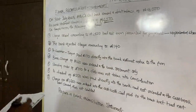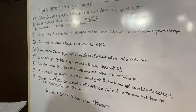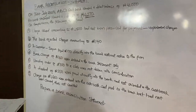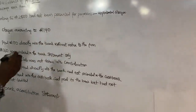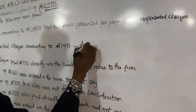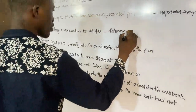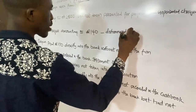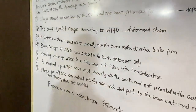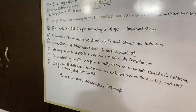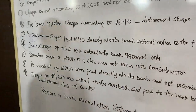The bank rejected a check amounting to 1,40 — that is a dishonored check. The reasons why a check is dishonored could be due to alteration, wrong figures, or signatures that are not the same. So the bank will reject it. That is a dishonored check.